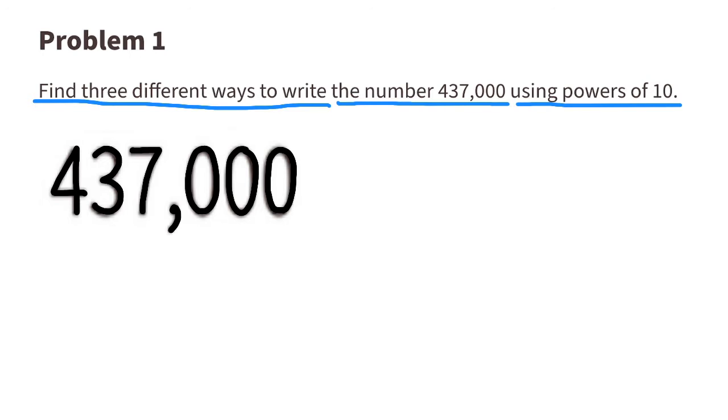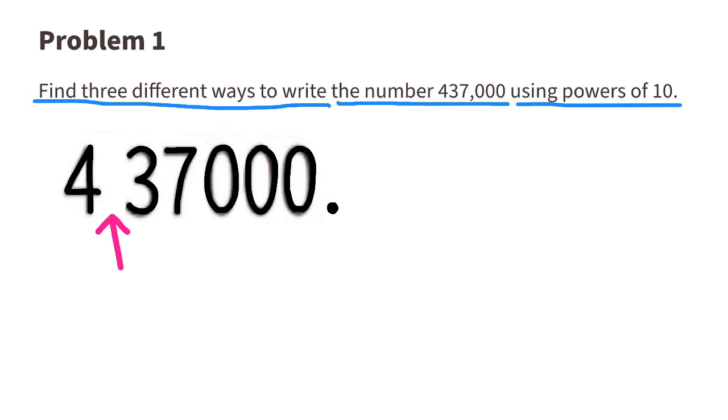Let's start with 437,000 with a decimal point at the end. Let's get rid of the comma since we're going to be moving that decimal point to the left towards the 4. If we move the decimal point to the left one place, it makes it 10 times smaller. So now it's 43,070 times 10 to the power of 1.